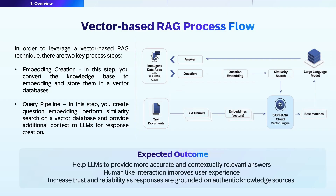SAP provides a vector engine capability natively in its own SAP HANA database. The second part is the query step. When a user asks a question, the question is converted into vector embeddings, and a similarity search is performed in the vector database to find matches. The best matches are then added to the large language model prompts as augmented context, and the LLM generates a relevant response for the user query. This augmented context helps LLMs use knowledge beyond their own training datasets.